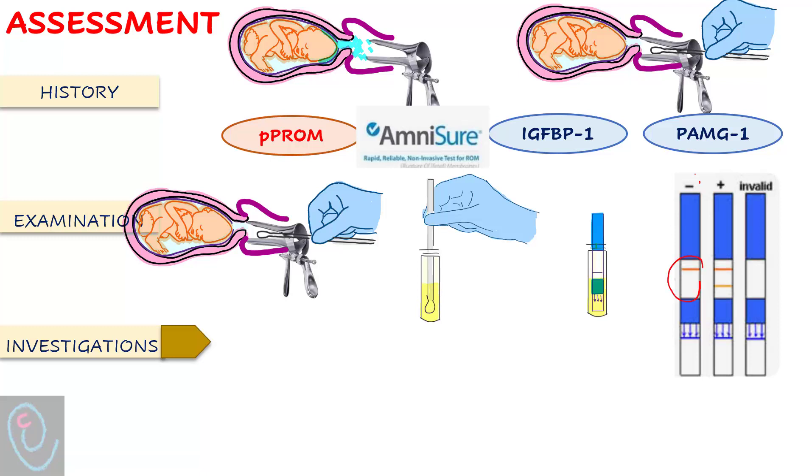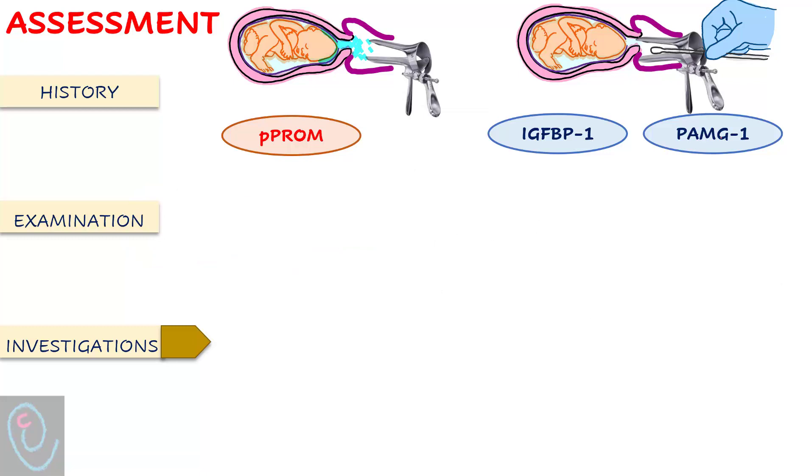One line means a negative test result. Two lines means a positive test result. No lines means invalid test. If the test result is positive, this supports the diagnosis. However, the test should be used in conjunction with clinical findings to ensure accurate diagnosis.